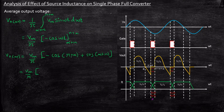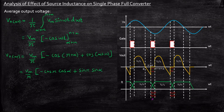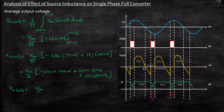Cos of pi plus alpha can be written using the cos(A+B) formula: cos(A+B) = cos(A)cos(B) minus sin(A)sin(B). So we can write minus cos(pi)cos(alpha) and since minus is already outside, minus of minus will be plus. So cos(pi plus alpha) gives minus cos(pi) which is minus of minus one, so we get cos(alpha). Also, sin(pi) is zero, so that term vanishes. You will be left with minus cos(pi) which equals plus cos(alpha). So the final average output voltage expression...